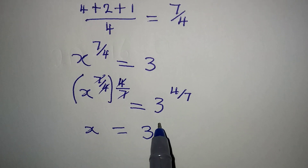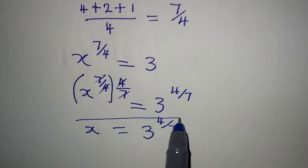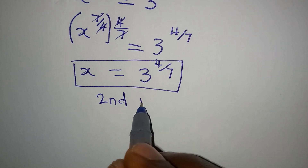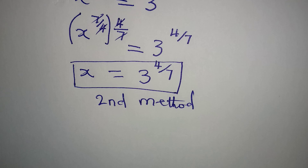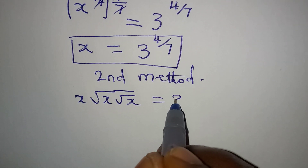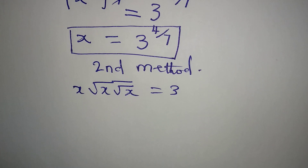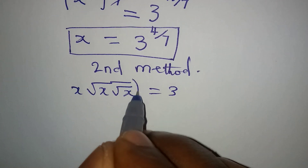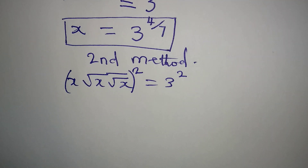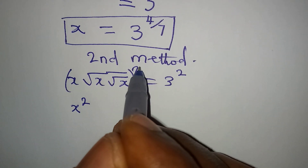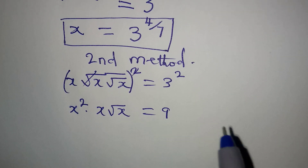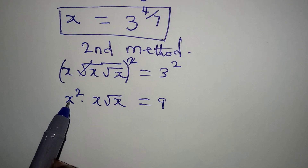So x is equal to 3 to the power of 4 over 7. This is the value of x using the first method. Now let's use the second method. For the second method we have the equation x times root x times root root x equal to 3. In this case, I will square both sides — squaring the left and squaring the right hand side as well. From here we have x squared multiplied by x times root x, which is equal to 9.